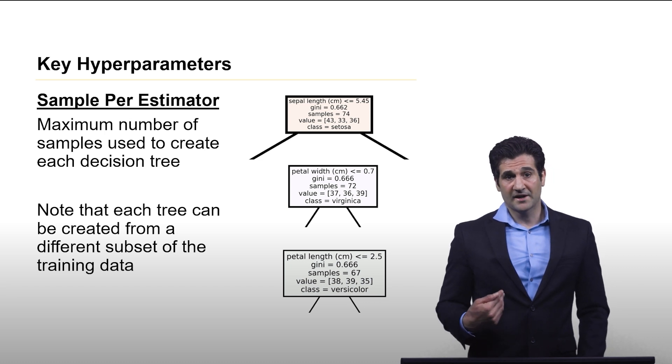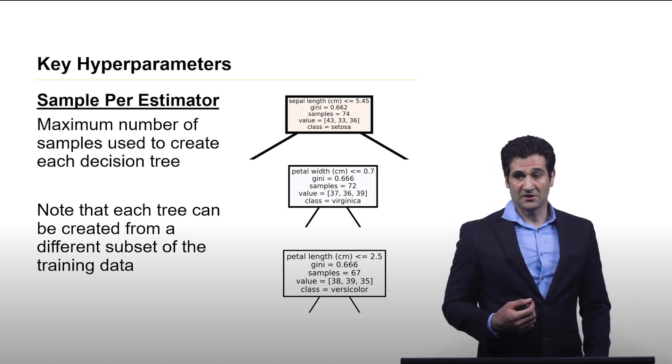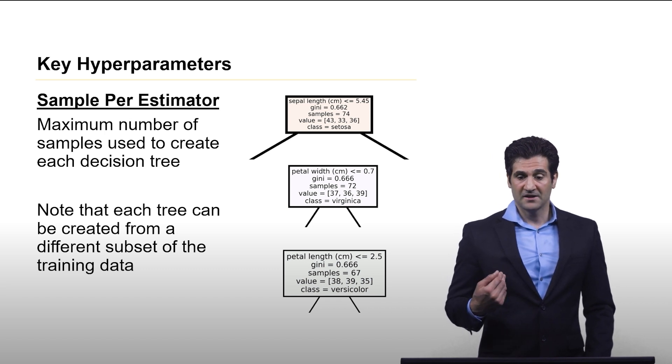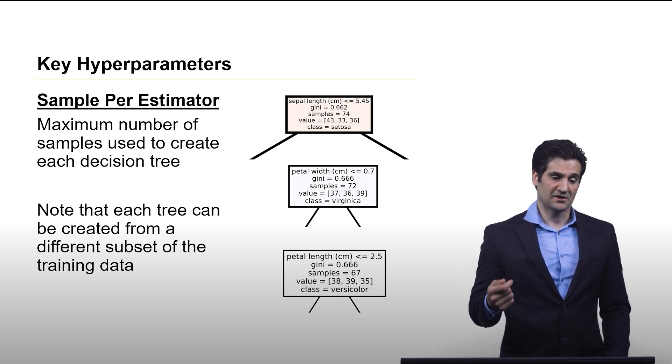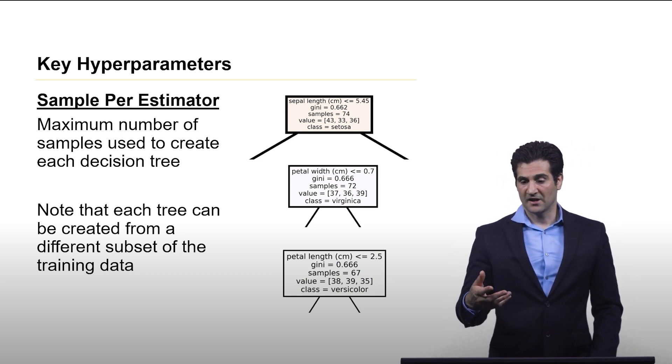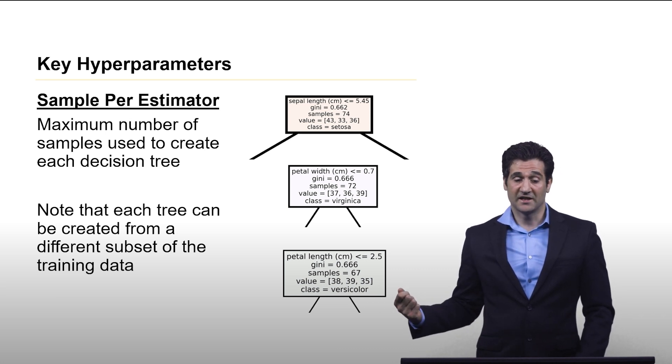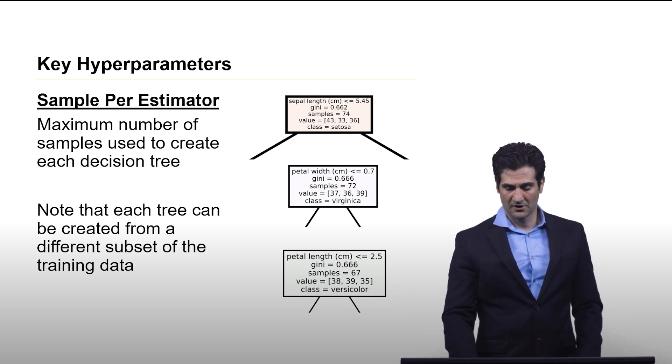The reason why it's okay to take a random sample out of the historical data is because we're making the assumption that all of that data is generated from the same distribution. That is why we think it's safe to take a subsample of the training data.